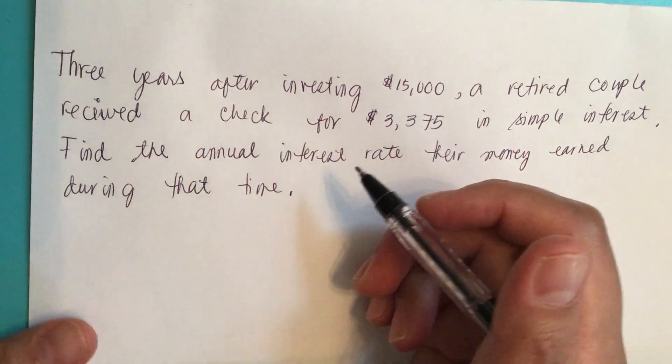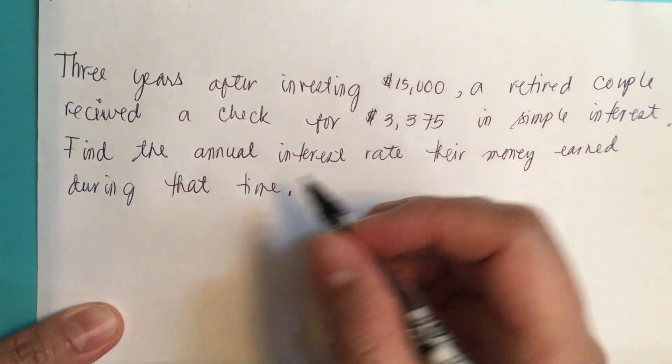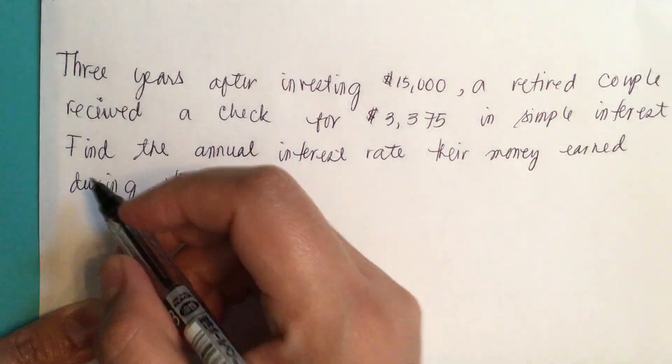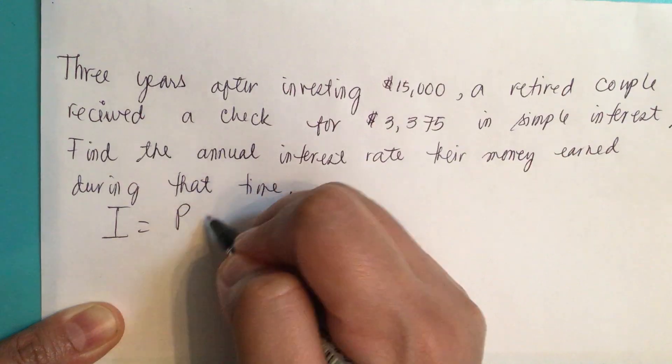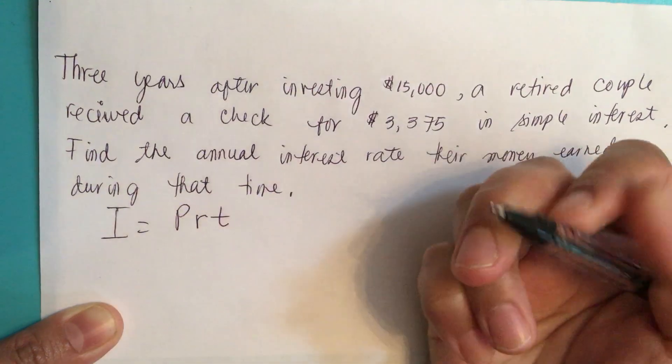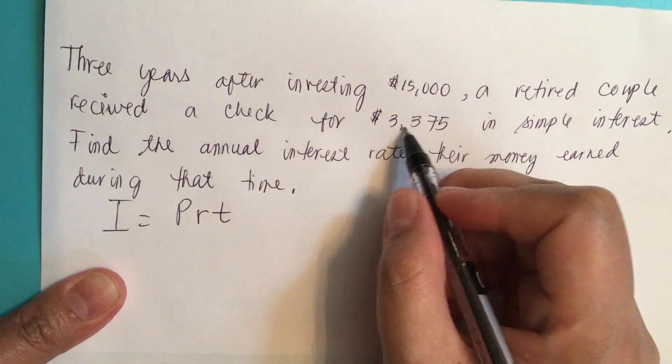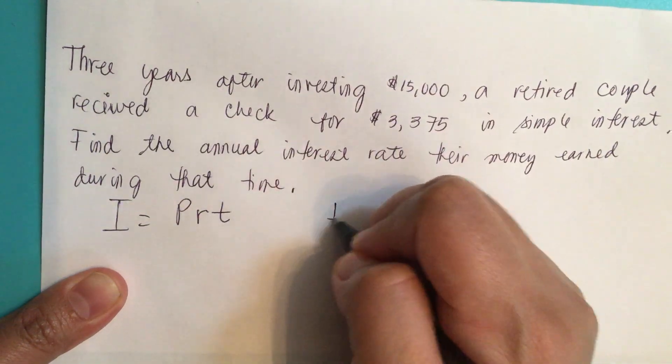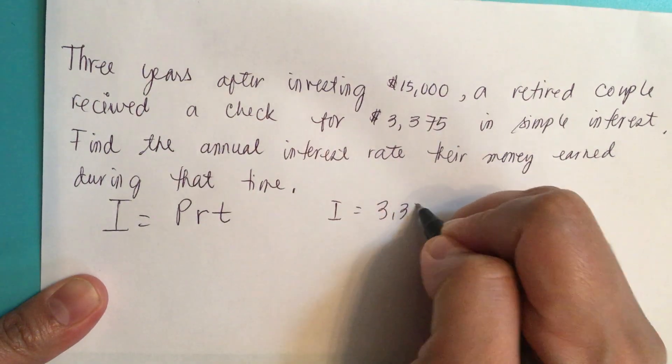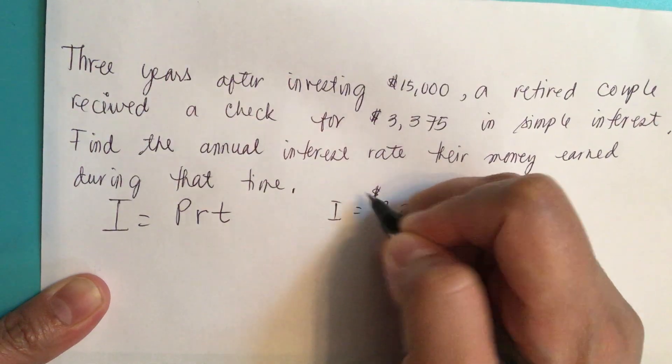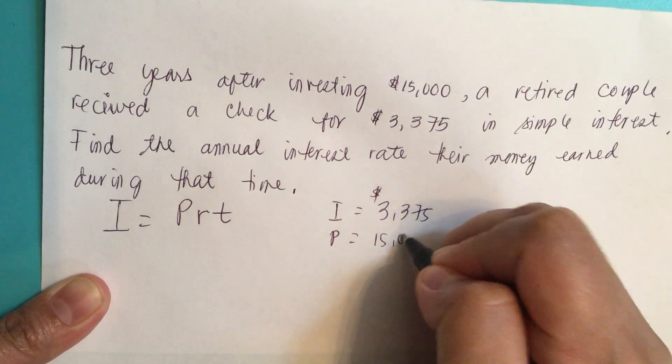We can use the formula for simple interest. I equals PRT. So the interest I is equal to $3,375, and P is equal to $15,000.